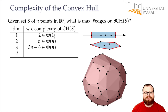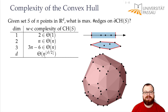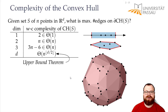What about the general case? In one dimension we have constant complexity, and in two and three dimensions we have theta of n. It looks like every second dimension the worst-case complexity increases by a factor of n, and that's true in general. The worst-case complexity is n to the floor of d over 2. So for d=3 it's n^1, for d=4 it's n^2, for d=6 it's n^3, and so on. This is the so-called upper bound theorem.